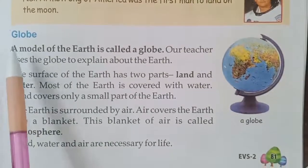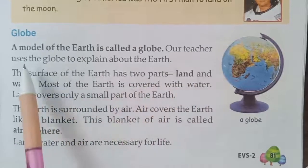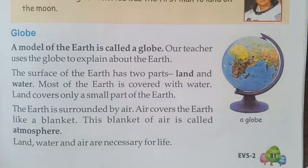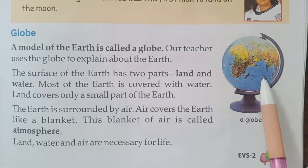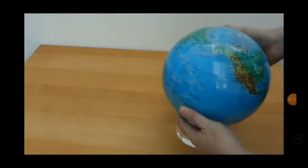Now let us study something about the globe. A model of the earth is called a globe. Our teacher uses the globe to explain about the earth. A globe is a small model of the earth — teachers in school use it to explain about the earth. We can see the earth in 3D figure using a globe, and that is how we see it in round shape. This is the model of the earth. We call it a globe.